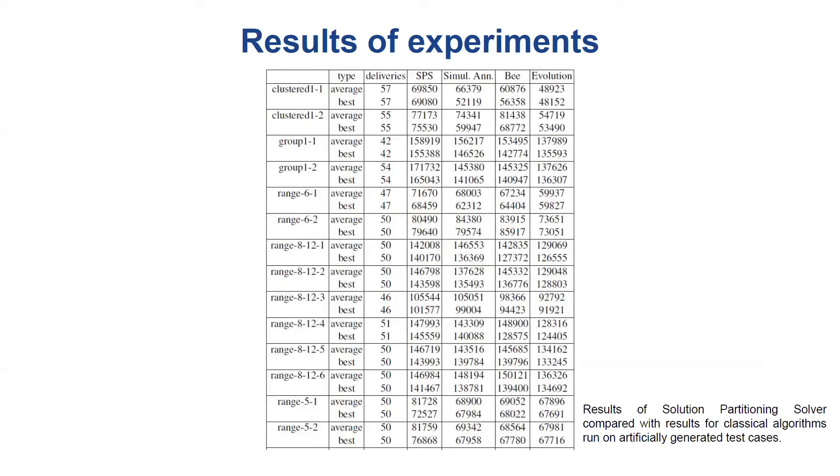Therefore, we decided to test further on the solution partitioning solver and compare it with three classical algorithms, simulated annealing, bee algorithm, and evolutionary annealing. We run next experiments with even more orders on mixed test cases generated by us, and it can be seen that solution partitioning solver usually gives a bit worse results than very good classical metaheuristics on the datasets from real-world OpenStreetMap data.